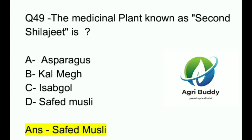Question 49. The medicinal plant known as Sikhin Chilajit is? A. Asparagus. B. Kalmeg. C. Isabghol. D. Safed musli. And the answer is Safed musli.